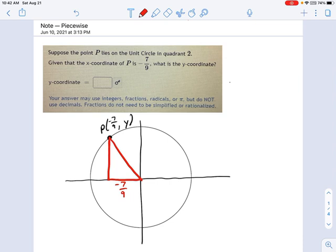Well, remember that phrase, P lies on the unit circle, okay? P lies on the unit circle. That means the hypotenuse must be 1, because the unit circle has a radius of 1.